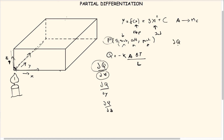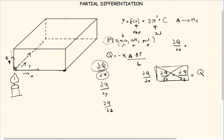It should be noticed that there is a difference in notation: we write del Q by del x. The del symbol tells us this is a partial differentiation — we are not considering all factors at once, but only one while treating the others as constant. So if you want the overall heat transfer in the metallic bar, you take partial derivatives with respect to x, y, and z together.